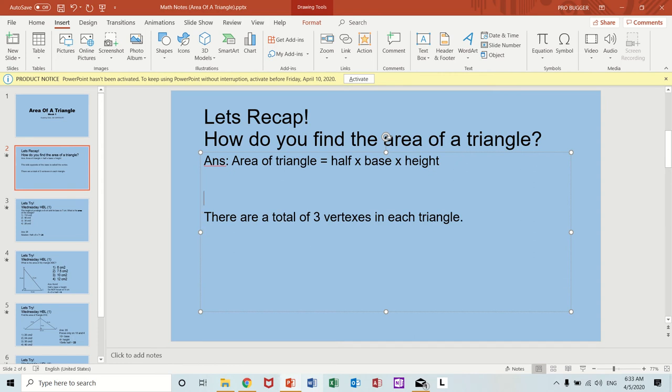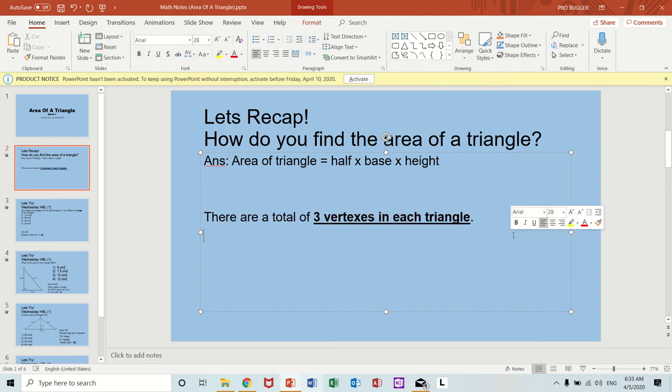There are a total of three vertices in each triangle. This is very important. If you realize I have a new laptop. And then there are three types of triangles: acute triangle.